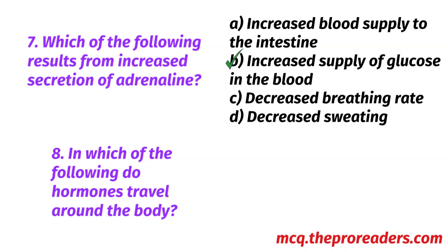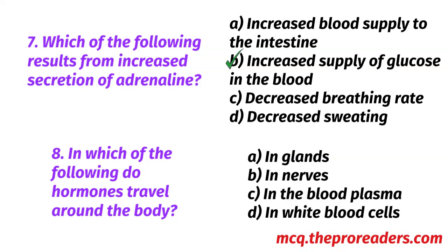In which of the following do hormones travel around the body? A. In glands. B. In nerves. C. In the blood plasma. D. In white blood cells. Option C, in the blood plasma, is the correct answer.